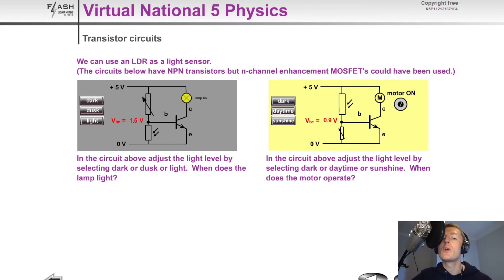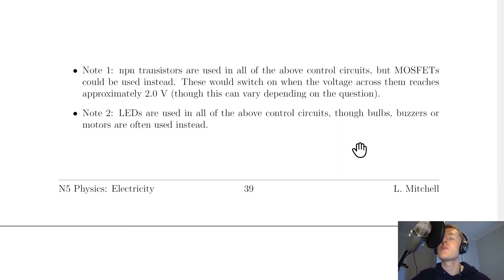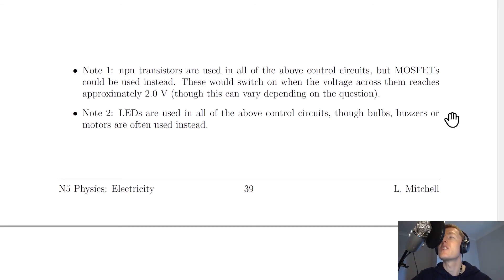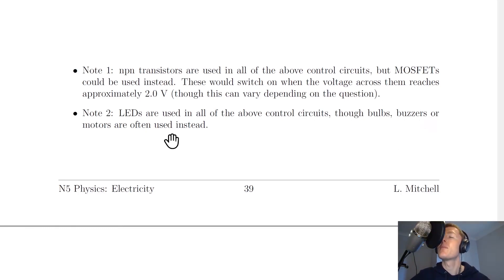Just like the temperature dependent circuits, control circuits could also be used to switch devices off instead of on, so you could be expected to explain how something switches off. Note 1: NPN transistors are used in all the above control circuits, but MOSFETs could be used instead — these switch on when the voltage across them reaches approximately 2.0 volts, though this can vary; in some questions it's roughly 1.8 volts. Note 2: LEDs are used in all the above circuits, though bulbs, buzzers, or motors are often used instead.